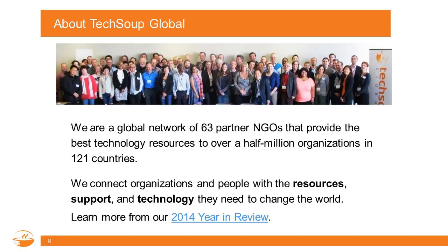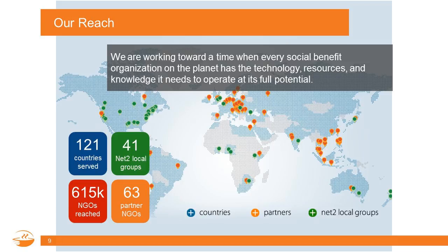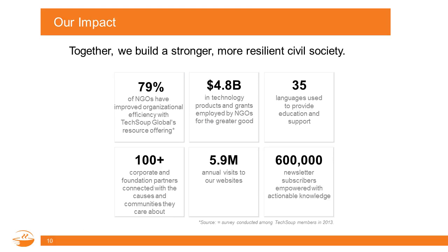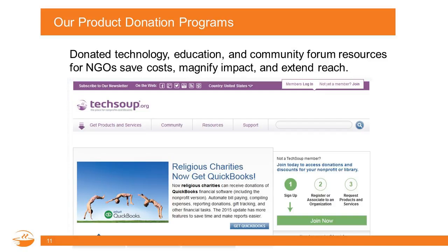We are here at TechSoup Global, a network of 63 partner NGOs around the world serving 120-plus countries, any place you see dots on this map — serving 615,000 NGOs worldwide to the tune of nearly $5 billion in donated technology products and grants for social good: nonprofits, libraries, NGOs, foundations, all across the board. I'm happy to have been a recipient of many of those donations at three small nonprofits before I started at TechSoup. You can learn more about our programs at TechSoup.org.